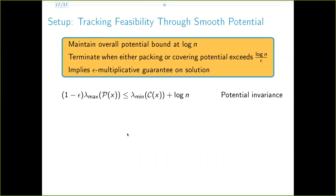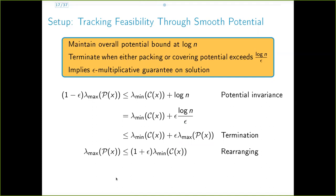Recall again the potential condition is roughly this statement. Rewriting log in this manner and noting that by the termination condition we can upper bound log n over epsilon in terms of lambda max of Px gives us the inequality that we want in our decision problem.